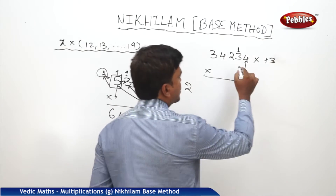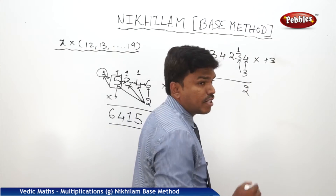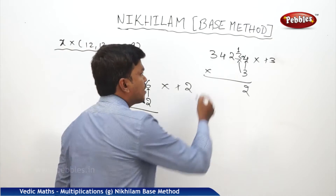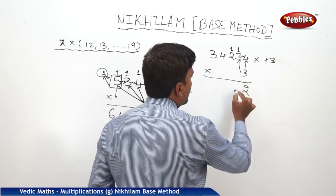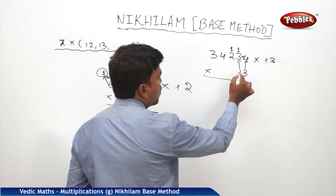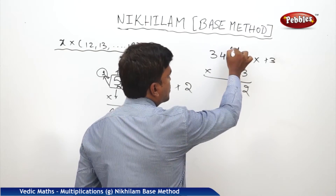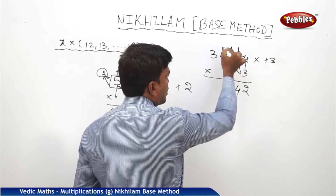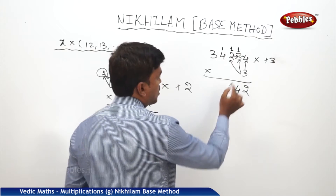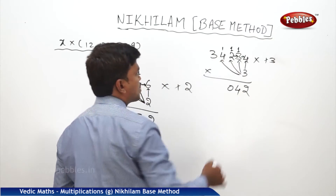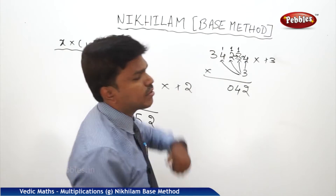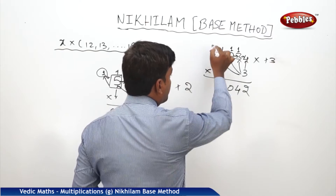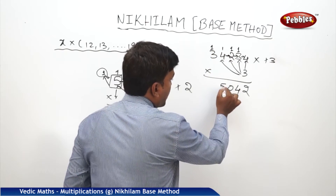Continue: 3 times 2 is 6, plus carry 1 is 7. Add right side digit 3: 7 plus 3 is 10 — carry 1, drop 0. Next: 3 times 4 is 12, plus carry 1 is 13. Add right side digit 2: 13 plus 2 is 15 — carry 1, drop 5.